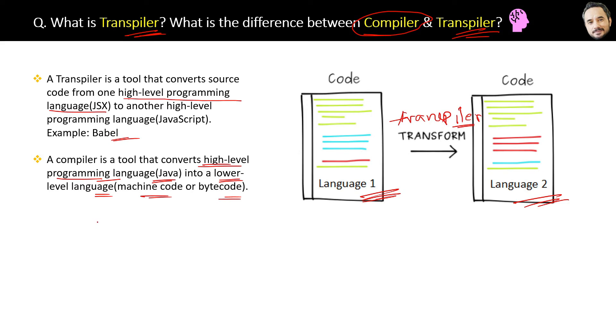A compiler converts high to low level language, but a transpiler converts from high to high level only. That's the difference and the answer to this question.